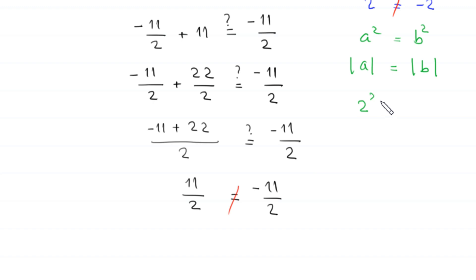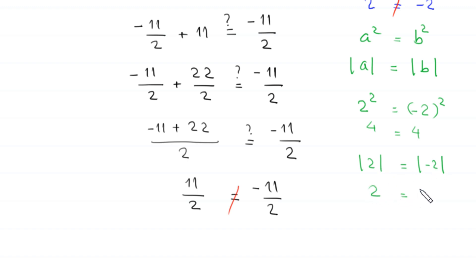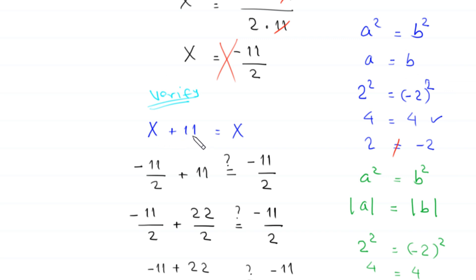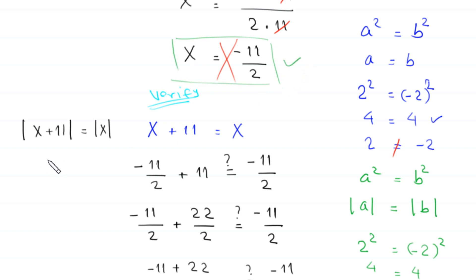For example, 2 squared equals negative 2 squared, both are 4, and the absolute value of 2 equals the absolute value of negative 2, since both are 2. So if we instead have the equation absolute value of x plus 11 equals absolute value of x, then x equals negative 11 over 2 would be a valid solution, because the absolute value of 11 over 2 equals the absolute value of negative 11 over 2 — both equal 11 over 2.